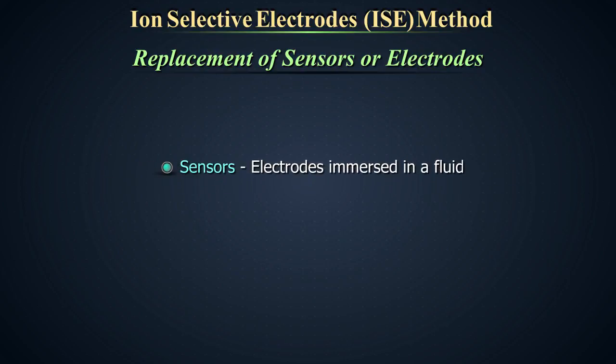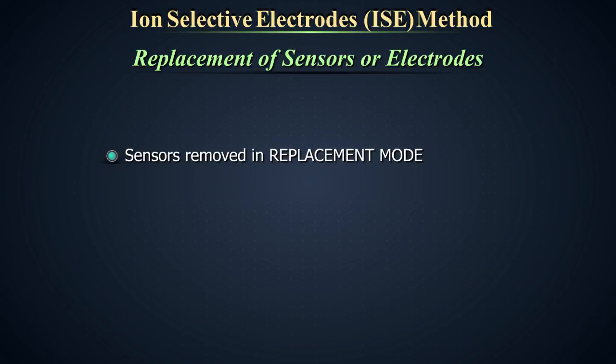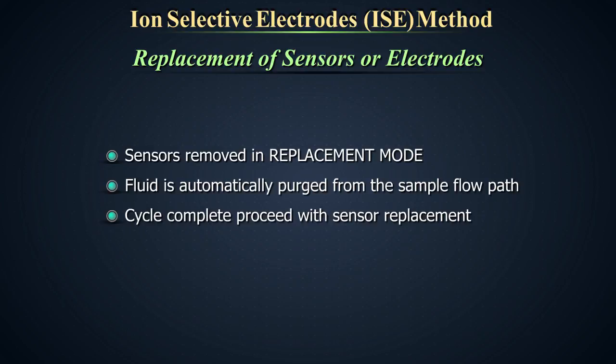The sensors are basically electrodes immersed in a fluid. The method is described for this particular machine. It may differ in machines from different manufacturers. Sensors should be removed in the replacement mode. Fluid is automatically purged from the sample flow path. When the purge cycle is complete, proceed with sensor replacement.